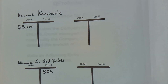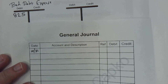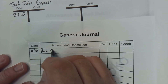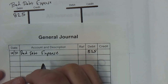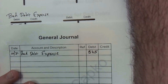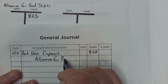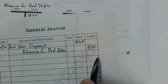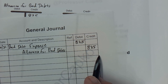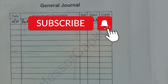Here's how this looks in the general journal at the end of the month — October 31. We always do debits first: debit Bad Debt Expense for $825. Then we indent and credit Allowance for Bad Debts for $825. Debits and credits balance, and we are set. That is how easy it is to account for bad debts and do the adjusting entry for the allowance for bad debts.